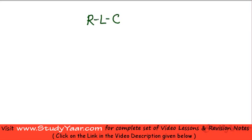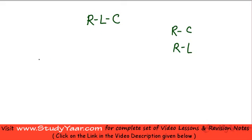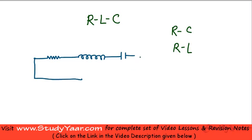In this lesson we are going to analyze a RLC circuit. We have already analyzed an RC circuit and an RL circuit; now we are looking at a RLC series circuit. I've got a resistor connected in series with an inductor, connected in series with a capacitor, with a certain AC voltage across these components. We need to find out what is the current flowing in this particular circuit.